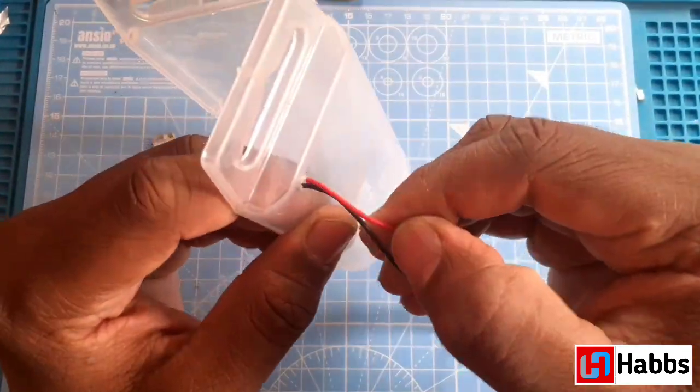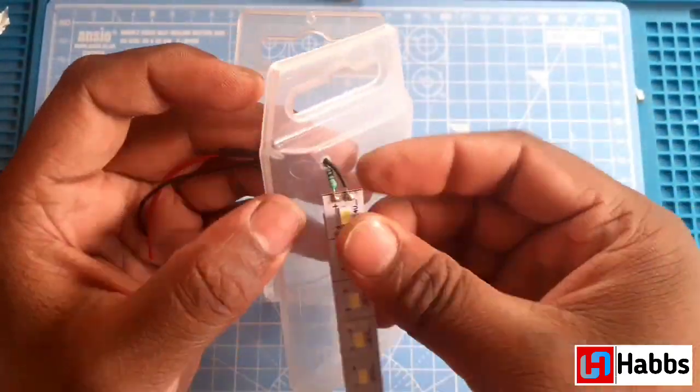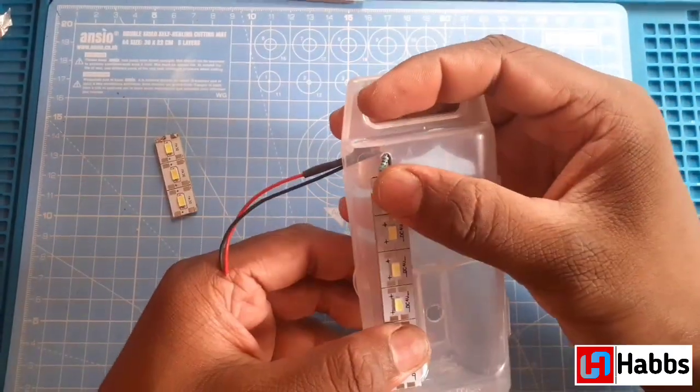Now we will pass the LED wire to inside the box. After proper positioning we will stick all the LEDs.